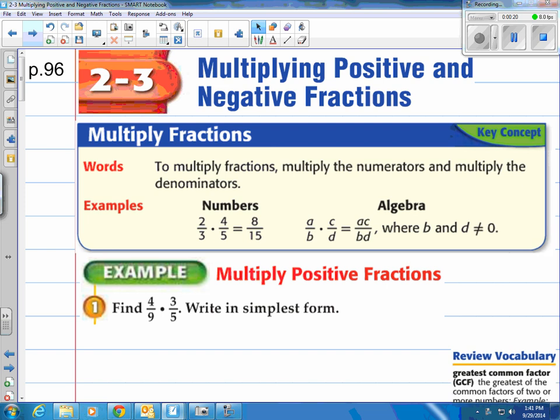Actually, multiplying fractions is easier than adding fractions because you don't need to have the denominators the same. Take a look at the key concept here. To multiply fractions, it says multiply the numerators and multiply the denominators. Basically, multiply the tops, multiply the bottoms, and then there's your answer. Of course, if you can simplify or reduce the fraction, do so.